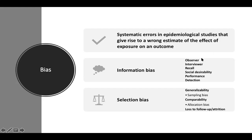Generally, we control for recall bias by not asking people questions directly — rather, we use medical records. Social desirability bias is when participants answer questions based on what they think is socially desirable. Performance bias, on the other hand, is when they just put on a show for you because they know what you want to see — this is what we call the Hawthorne effect, where people act differently when they are being studied or observed.